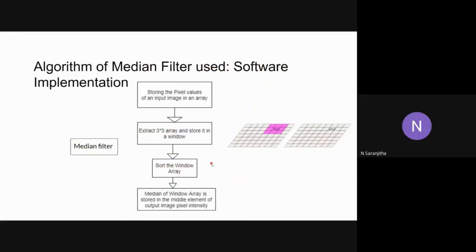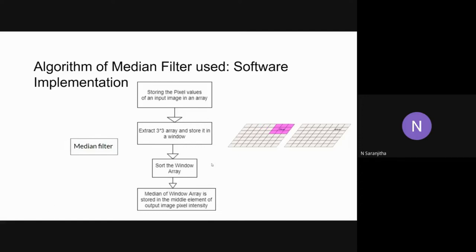This is the algorithm of the median filter used in the software implementation. The median filter is used to remove salt and pepper noise from the image. Due to salt and pepper noise, there are unnecessary white and black dots on the image. In a grayscale image, pixel intensity values range from 0 to 255, where 255 represents white and 0 represents black. Salt and pepper noise occurs when there are more of these extreme pixel intensity values on the input image.